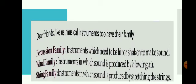The wind family includes instruments in which sound is produced by blowing air — for example, the trumpet and the harmonica. The string family includes instruments in which sound is produced by stretching strings — for example, the sarod and the violin. So now you know three kinds of musical instrument families: percussion, wind, and string. Thank you!